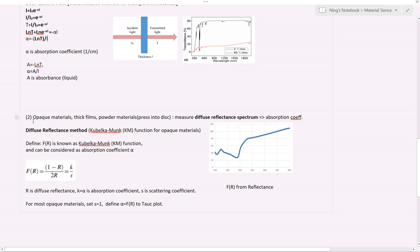Make sure that we prepare the sample in the right way. The second method is diffuse reflectance method. This method is for opaque material. Usually, it is for thick films, powder material, or ceramic material. We usually need to press into a disc so that we can use it for the measurement. This method is called diffuse reflectance spectrum. We are measuring the reflectance instead of transmittance.